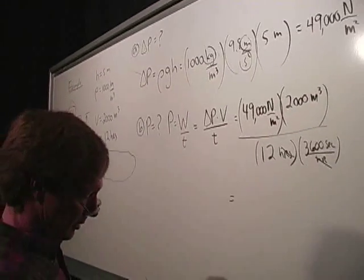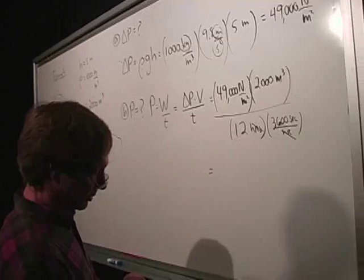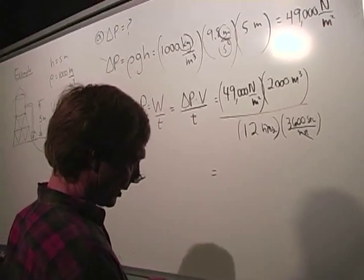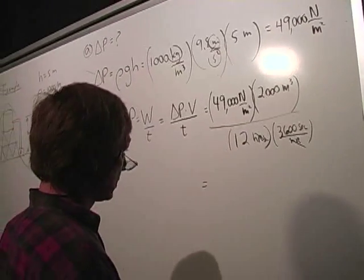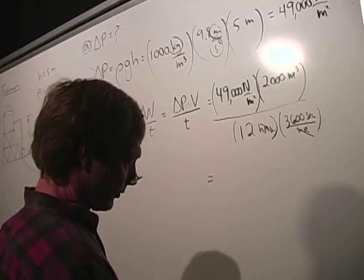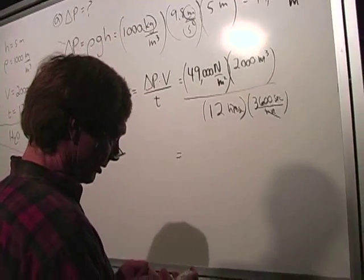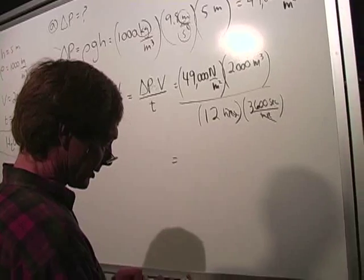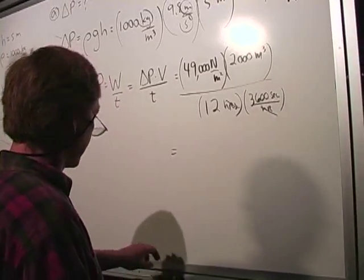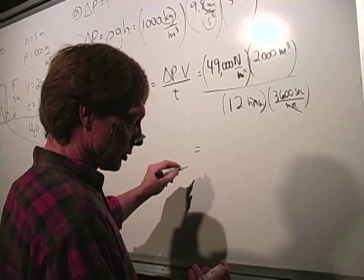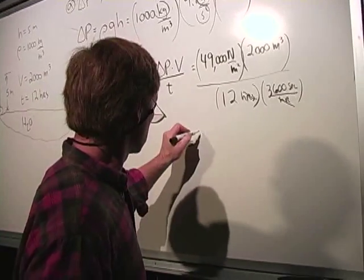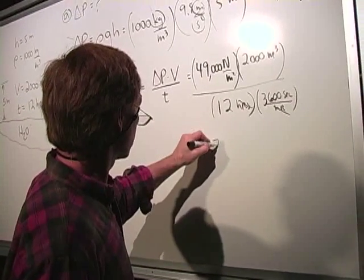And let's see what we get. So that'll be 49,000 times 2,000 divided by 12, divided by 3,600. So that's on the bottom two. And I get 2,270.